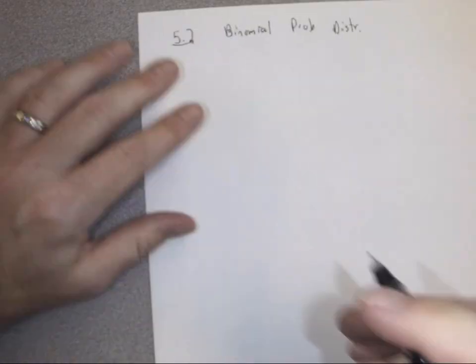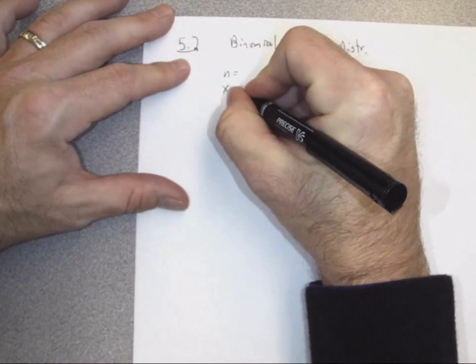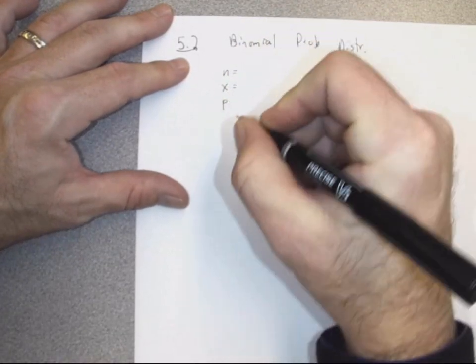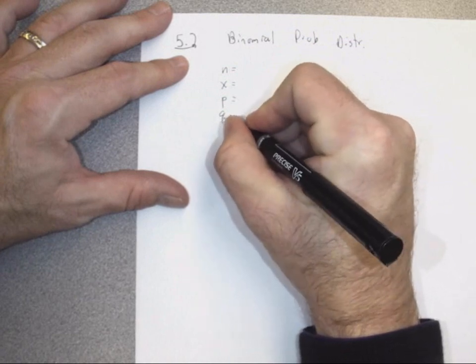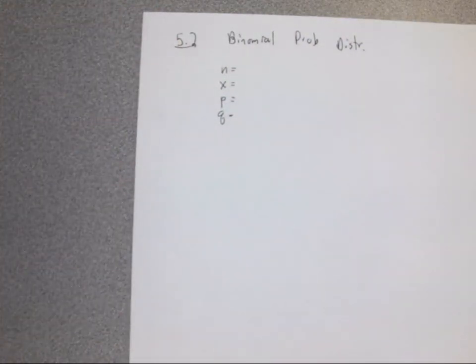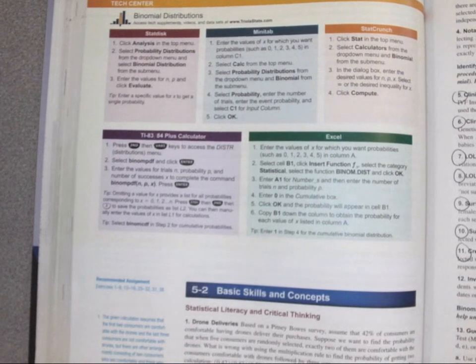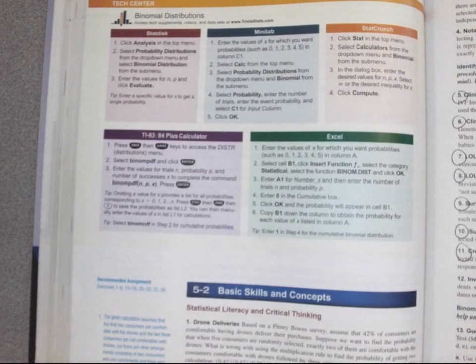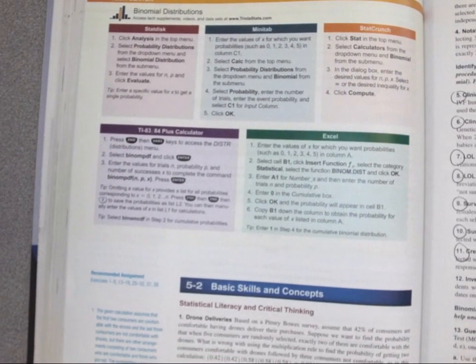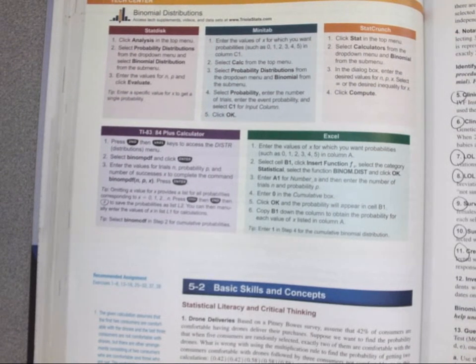What we need to identify are n, x, p, and q. Starting with the first sentence: we want to find the probability that when five customers are randomly selected, exactly two of them are comfortable with delivery. What do the five and the two represent?